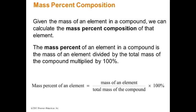Percent composition: given the mass of an element in a compound, we can calculate the mass percent. The mass percent of an element is its mass divided by the total mass, multiplied by 100. That factor of 100 converts the ratio to a percent — no different than sports statistics. You can rearrange these equations as needed.